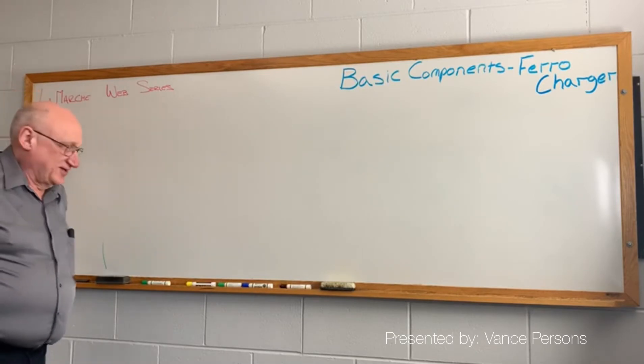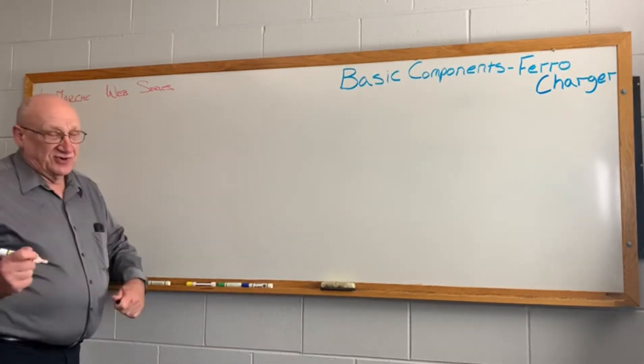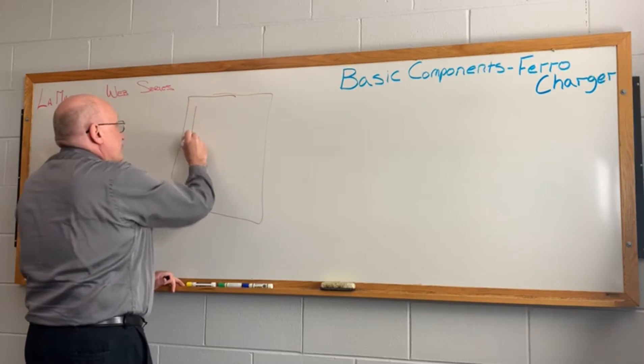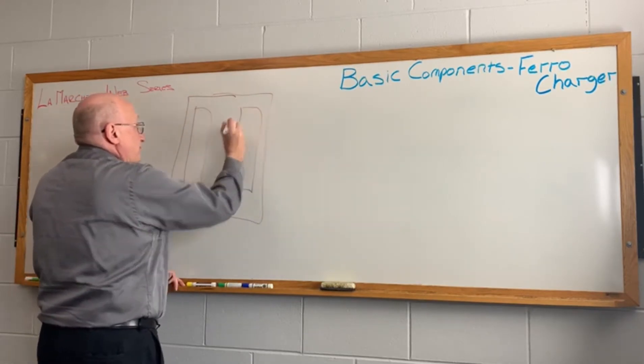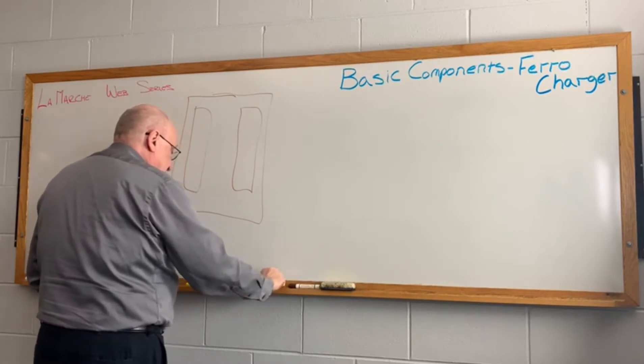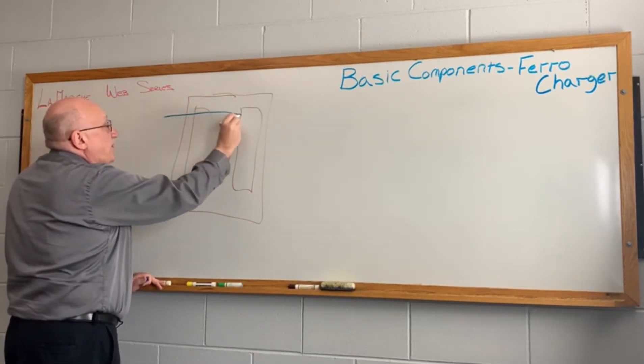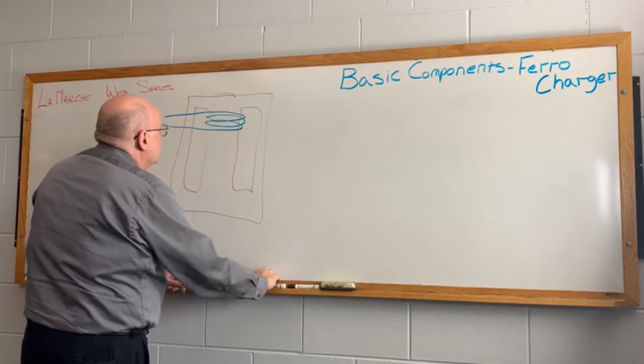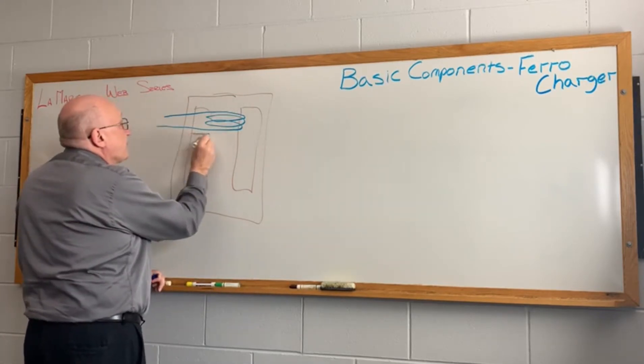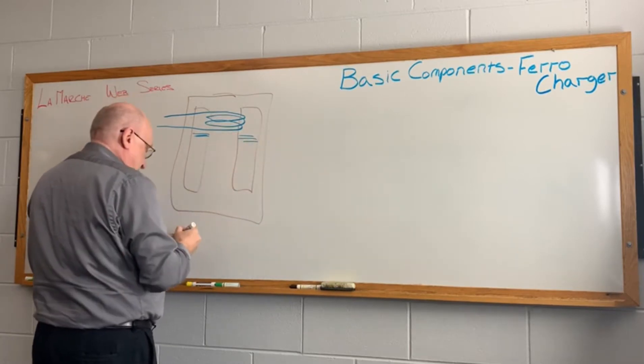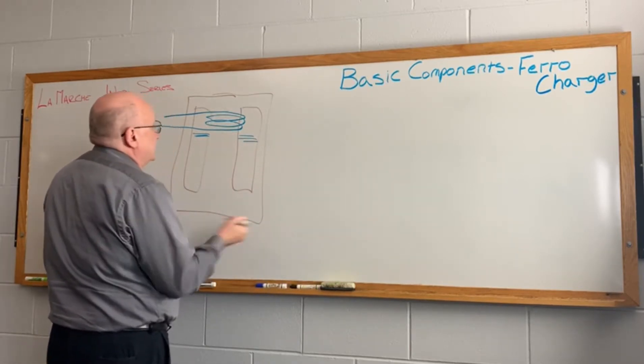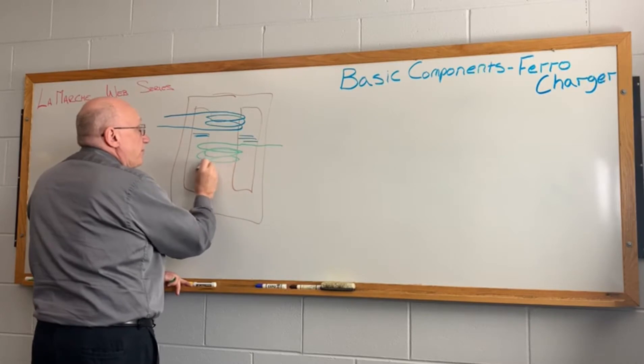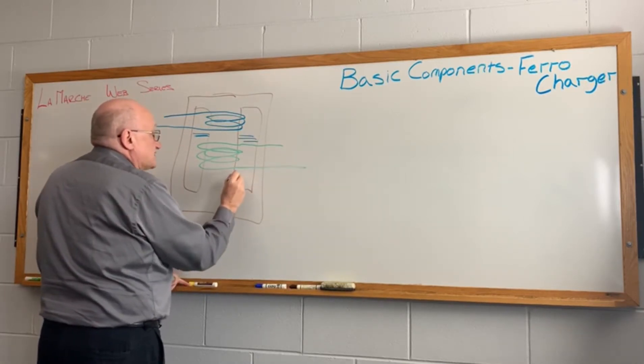So I will start with the basic, and so basic we're going to get down to the basic component. A lamination, and to that we're going to add a primary coil followed by shunts, and then we're going to add a resonant winding and a secondary winding.